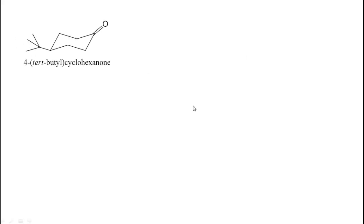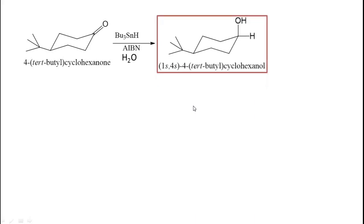Let us take another reactant: 4-t-butylcyclohexanone. What will be the product on treating with tributyltinhydride? This, in presence of water, undergoes an equatorial attack — equatorial attack gives axial hydroxide. So 4-t-butylcyclohexanol with axial OH is formed. It is an equatorial attack; axial OH is formed.